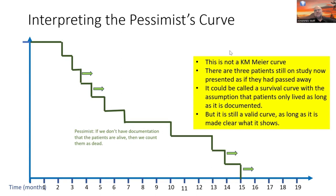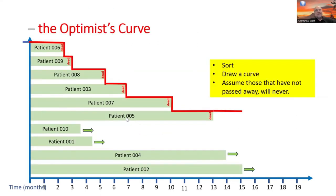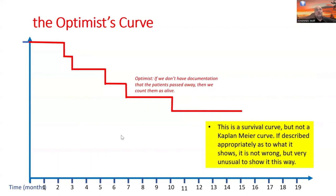The pessimist curve has some meaning — for instance, if you want to know how much drug you've used up. Let's do it a different way. This is the same figure with patients aligned on the left, but this time sorted differently: all patients that have passed away go to the top, and those that have not passed away or where we don't know go to the bottom as live or censored data. Censored in the context of a Kaplan-Meier curve is a good thing. This is the curve you get — I'm going to call this the optimist curve. It is based on the assumption that somebody where we don't know if they died lives until the end of observation time. That assumption is equally wrong as the other one.